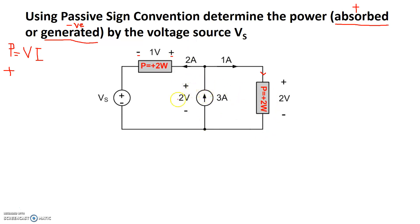Now let's take a look at the current source right there. The current source has 3 amps of current. A total of 3 amps is coming out of the positive terminal — current is not going into the positive terminal. Since we're working with passive sign convention, we can set the current direction as entering, and write this as minus 3 amps. Now negative 3 amps is going through the positive side of the voltage source, so it is following passive sign convention. Minus 3 amps times 2 volts gives negative 6 watts, meaning power is actually being generated.